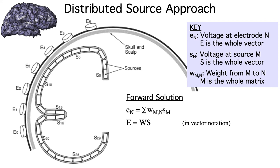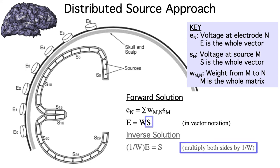By expressing the forward solution this way, it's easy to see how we can compute the inverse solution. We're trying to solve for the magnitude at each source at a given time point, given the observed voltage at that time point and the weights. To do this, we just multiply both sides of the equation by 1 over W, which is the inverse of the W matrix.